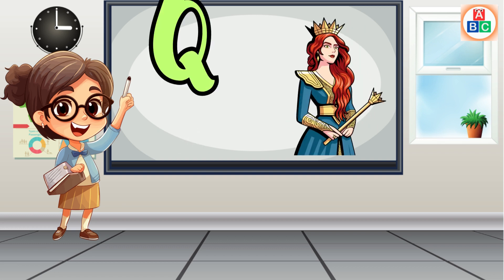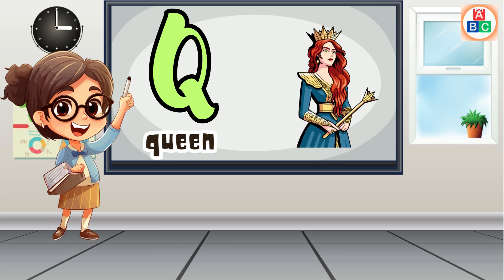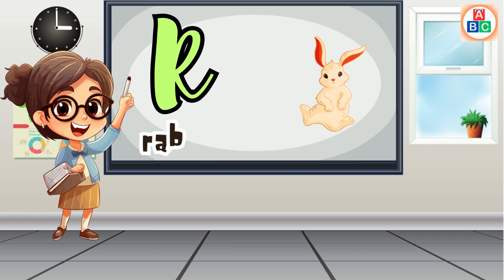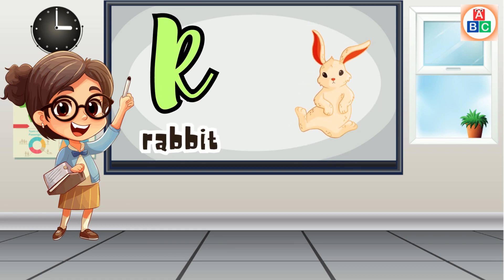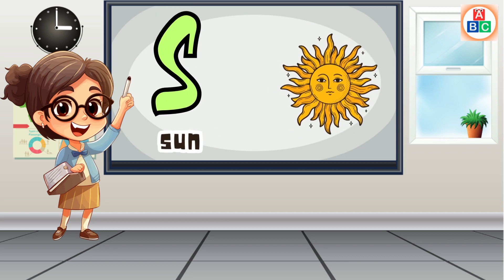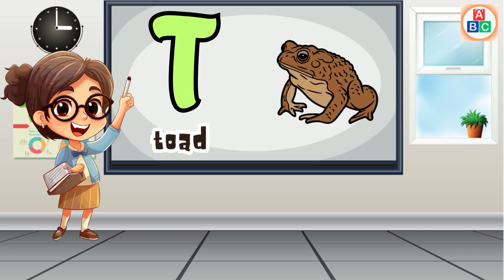Q is for queen, q-q-queen. R is for rabbit, r-r-rabbit. S is for sun, s-s-sun. T is for toad, t-t-toad.